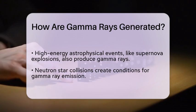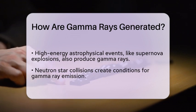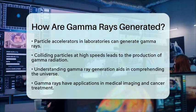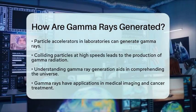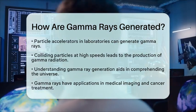In laboratories, scientists can also generate gamma rays using particle accelerators. By colliding particles at high speeds, they can create conditions that lead to the production of gamma radiation.